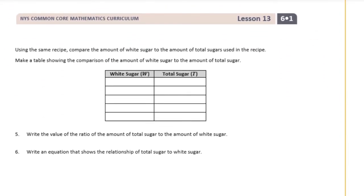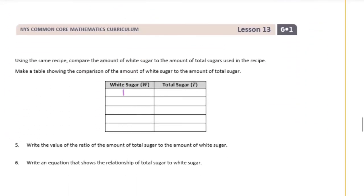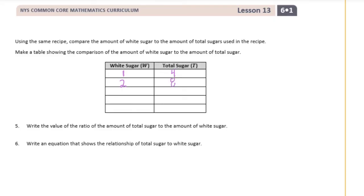Using the same recipe, compare the amount of white sugar to the amount of total sugars used in the recipe. Make a table showing the comparison of white sugar to total sugar. If we have one cup of white sugar, the total sugar — brown and white together — is four. If we had two, the total would be eight; three, the total would be twelve; four, it would be sixteen; and five, it would be twenty.